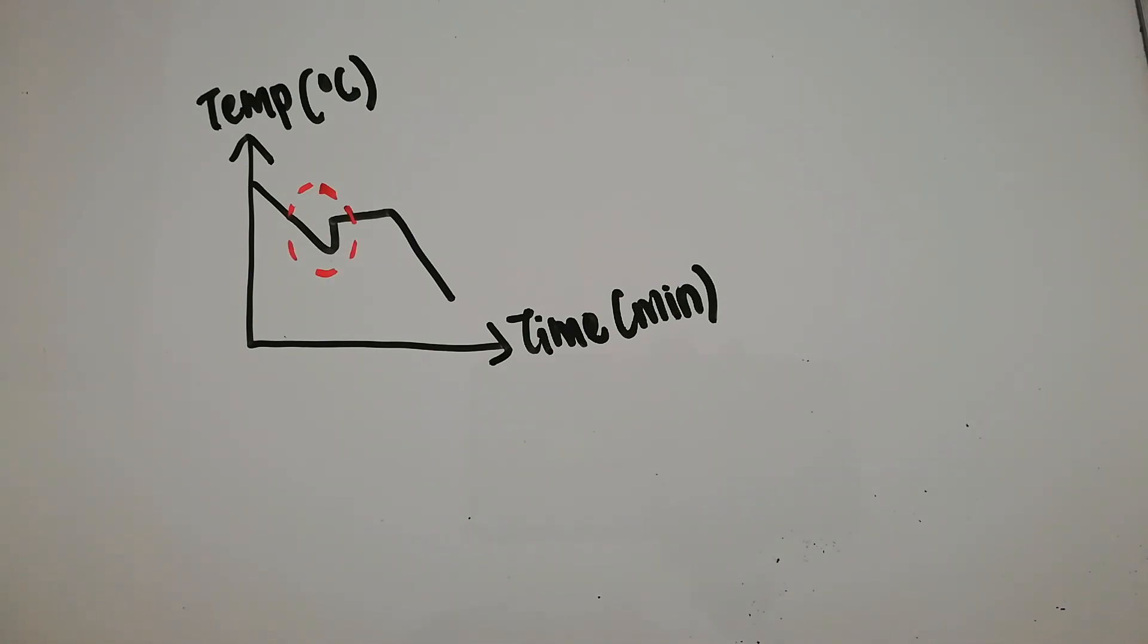To avoid super cooling, use conical flask and stir the naphthalene while cooling. That's the ending of this video. Thank you for watching.